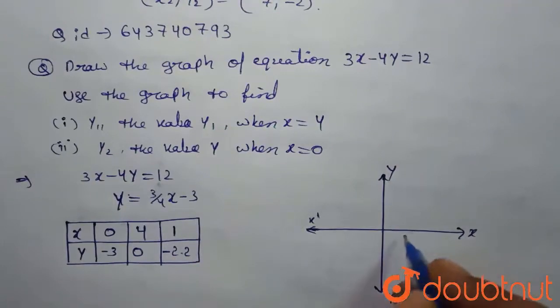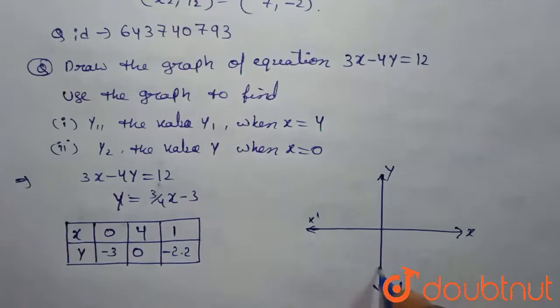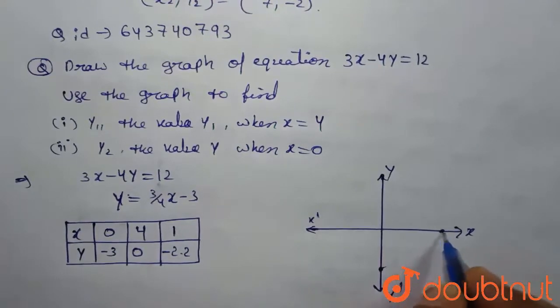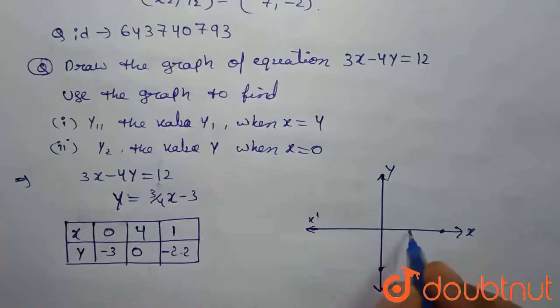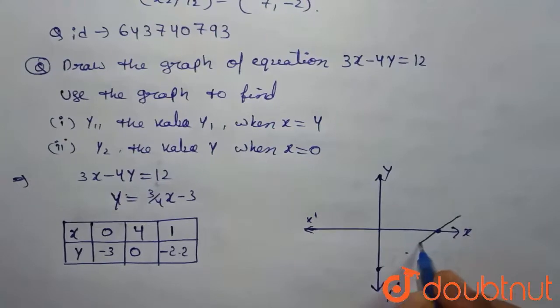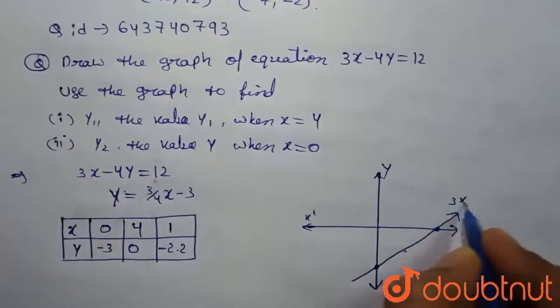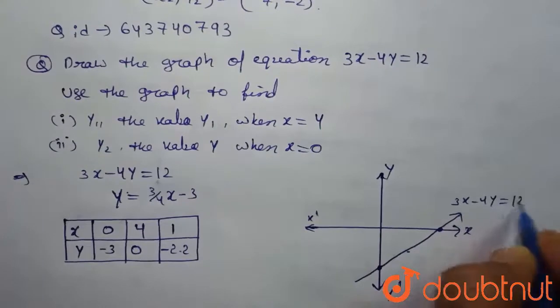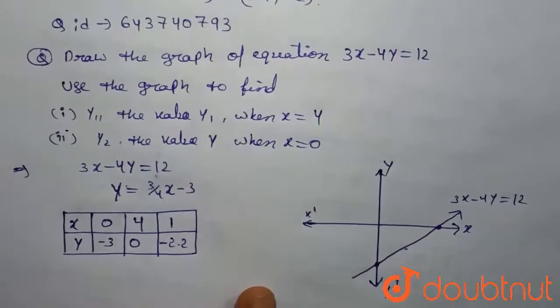Therefore, now we need to draw the graph. x is equal to 0, y is minus 3 is approximately here. When x is equal to 4, y is 0 is approximately here. When x is equal to 1, y is minus 2.2 is approximately here. This is the line of 3x minus 4y is equal to 12.